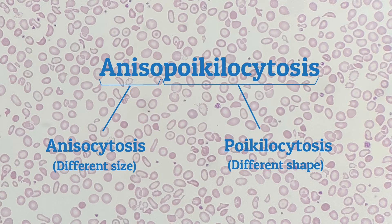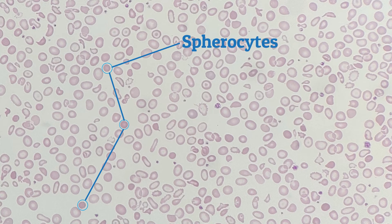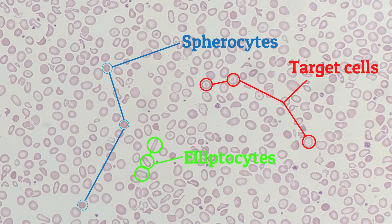Anisopoikilocytosis is therefore used to describe a blood film in which the red cells are of different sizes and different shapes. As you can see in the image, there are small cells such as spherocytes, as well as some large cells. There are target cells, elliptocytes and fragments, to name a few.